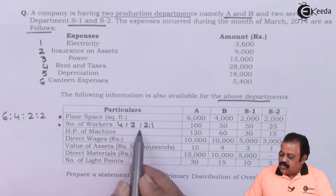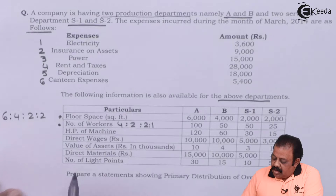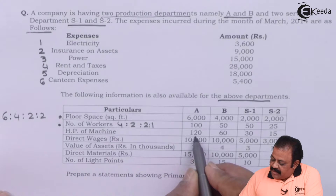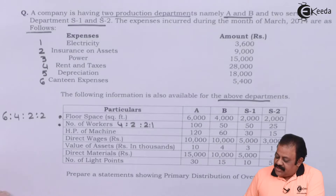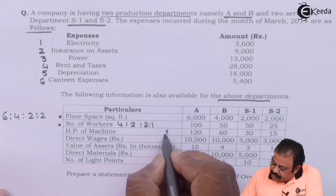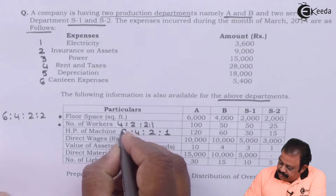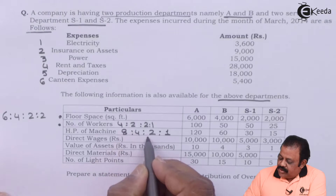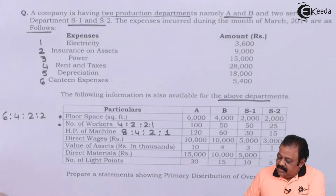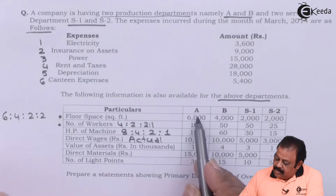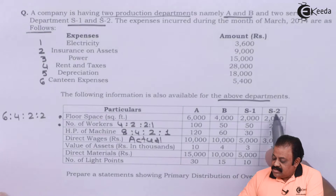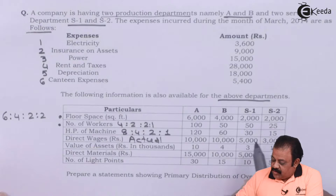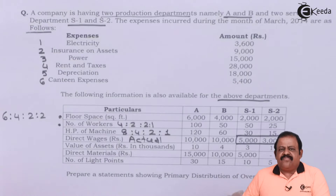Horsepower of machines: 120, 60, 30, and 15 — giving a ratio of 8:4:2:1. Direct wages actual amount is given — Department A: 10,000, Department B: 10,000, Service Department S1: 5,000, and Service Department S2: 3,000.